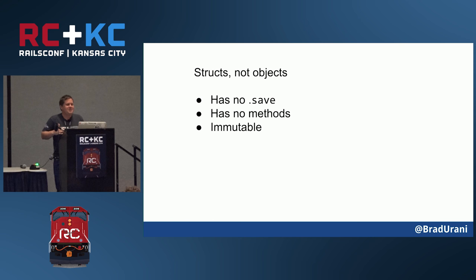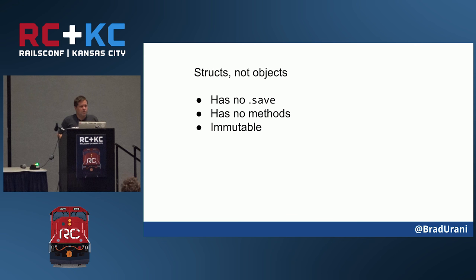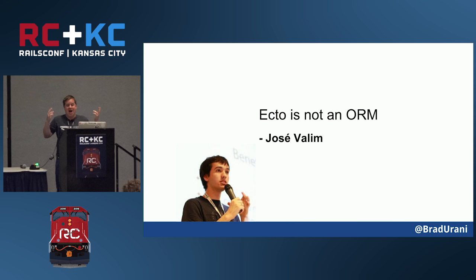What's also interesting about Phoenix is it has no save method — you can't just query something, change a field and hit save. And it doesn't return objects, it returns structs. It's returning bananas, not gorillas — just data in a struct that doesn't have methods hanging off it. Those structs are immutable: once they're there, they're there. Which means you have to design your programs differently. Interestingly, it returns structs not objects, which means it's not technically an object relational mapper. I'm a little embarrassed to say I didn't figure that out until after I proposed this talk.